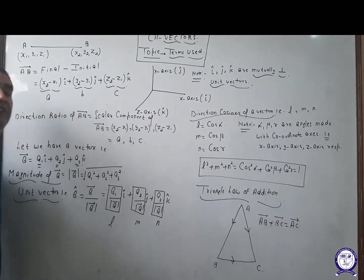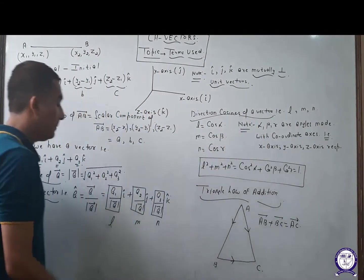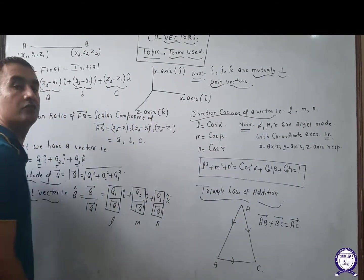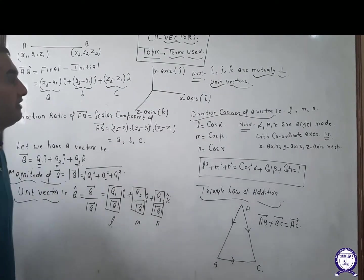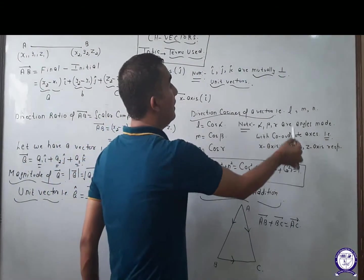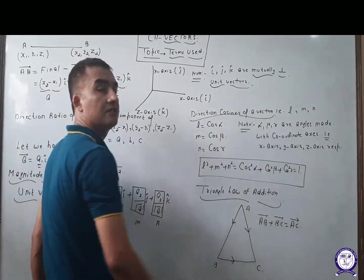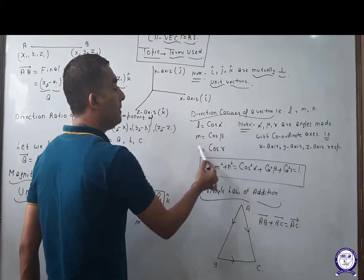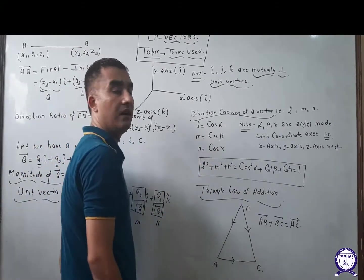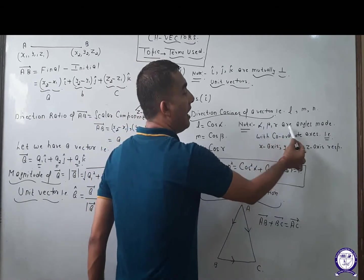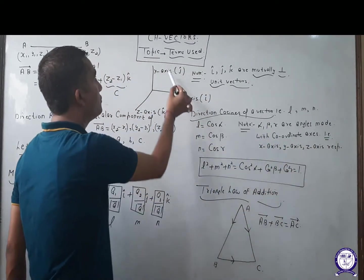In a unit vector, the scalar components are known as the direction cosines of the vector. Direction cosines are represented by small l, small m, and small n. These are: l = cos alpha, m = cos beta, and n = cos gamma. Alpha, beta, and gamma are angles made with the coordinate axes — x-axis, y-axis, and z-axis respectively.